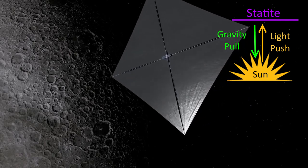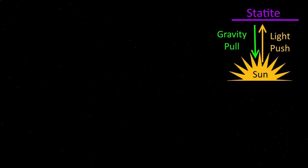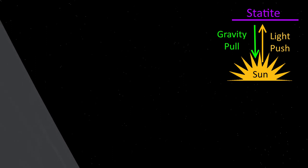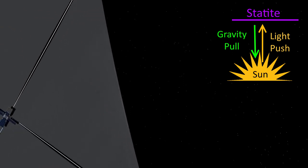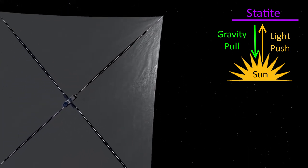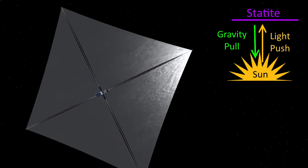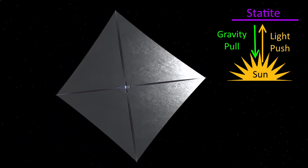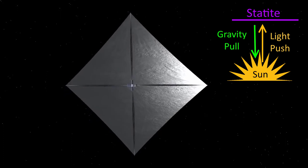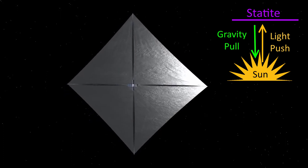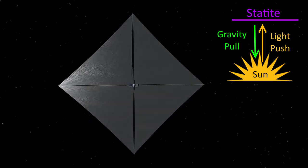Too light and it blows away, too heavy and it falls into the star. Interestingly, the bigger stars permit heavier statites, because while they have more gravity than smaller stars, they also produce vastly more light. A star twice as massive has twice the gravitational force, but will be at least ten times as bright.